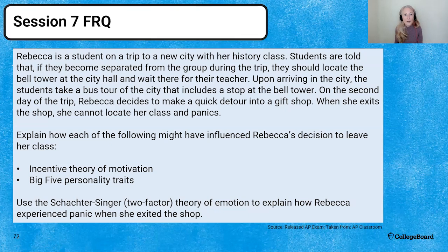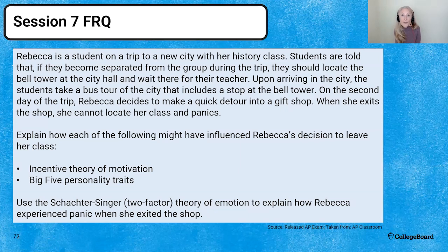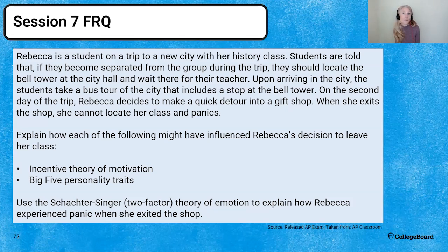This is the last FRQ I'll be presenting for session seven. If you have a chance before you meet with Dr. Swope in the next session where he will review this FRQ, please try to write it. You'll need to look at the incentive theory of motivation — that's intrinsic and extrinsic — the Big Five personality traits (pick one to use), and the Schachter-Singer two-factor theory of emotion, which requires using cognitive appraisal of the physiological response.